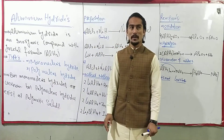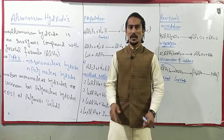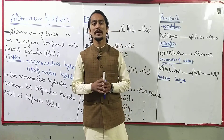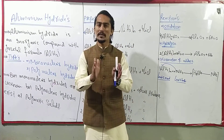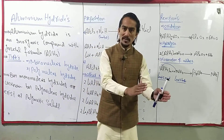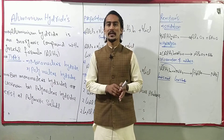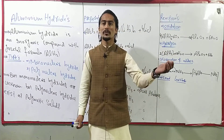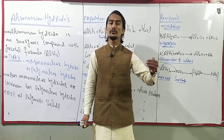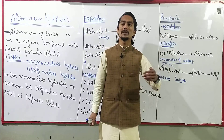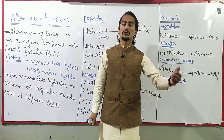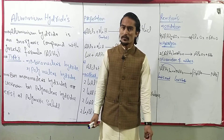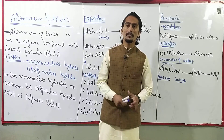What are aluminium hydrides? They are compounds of aluminium with hydrogen. Aluminium hydrides can be mononuclear or polynuclear. Mononuclear are those in which one aluminium nucleus is involved, and polynuclear are those in which two or more aluminium nuclei are involved — these are called polynuclear aluminium hydrides.